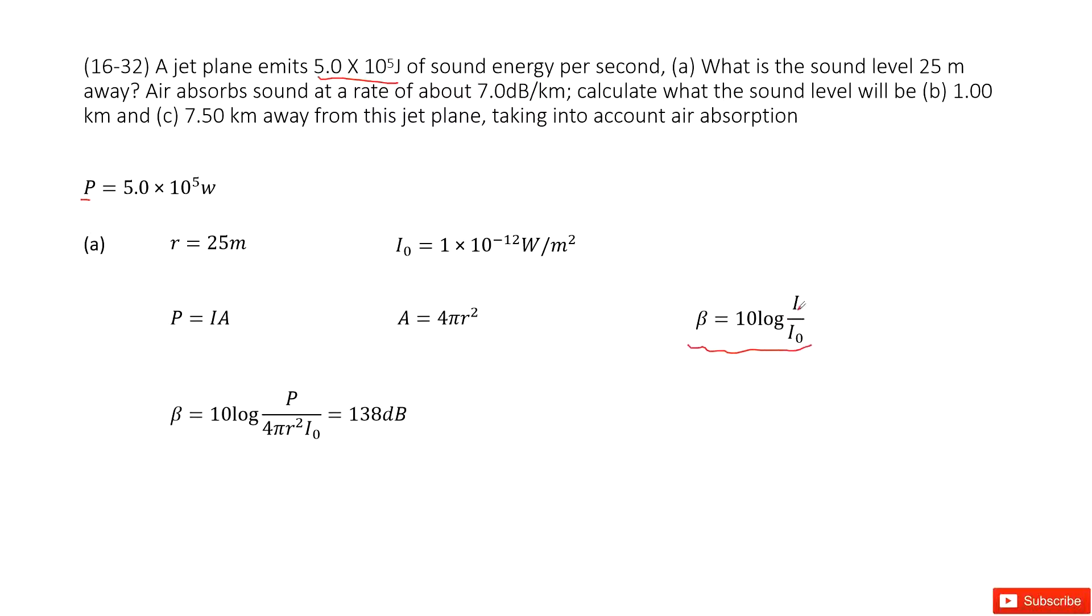In this function, I is the intensity from this airplane engine, and I₀ background is given. So we need to find I first, and we can connect I with power using this function: power equals I times A.